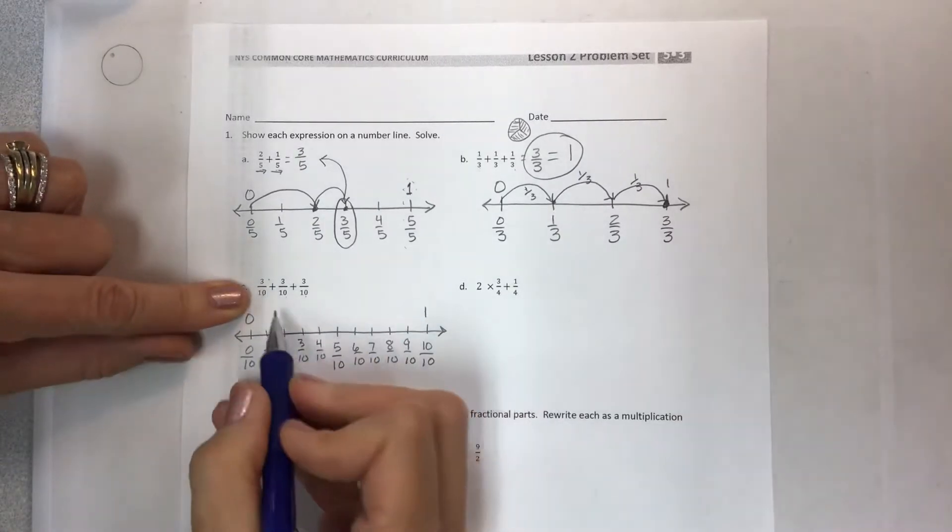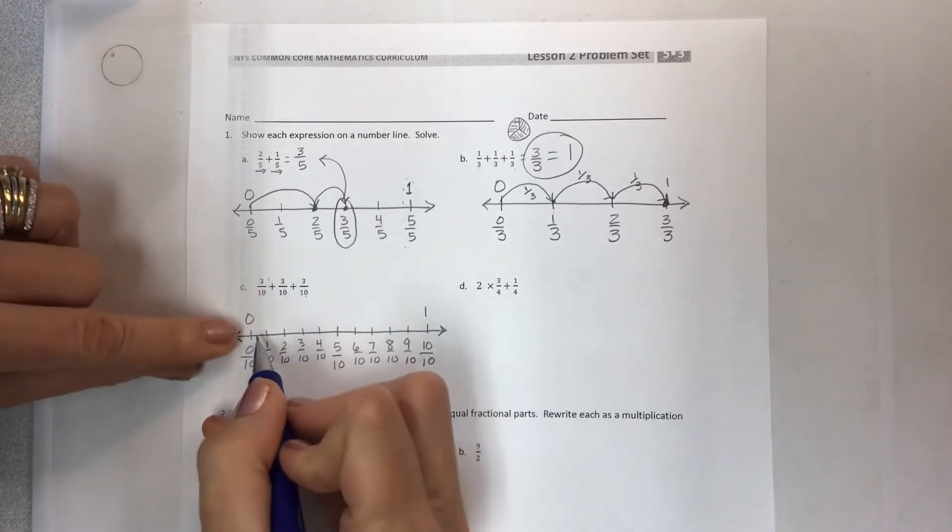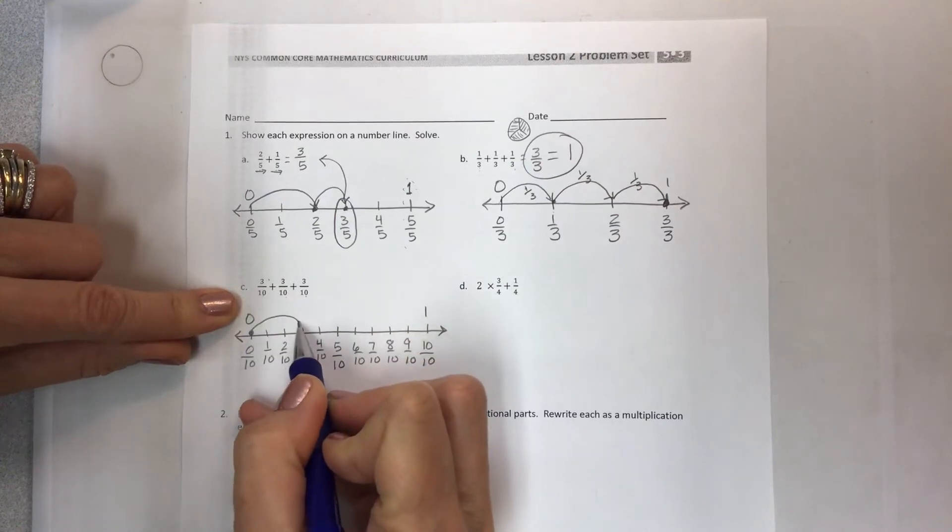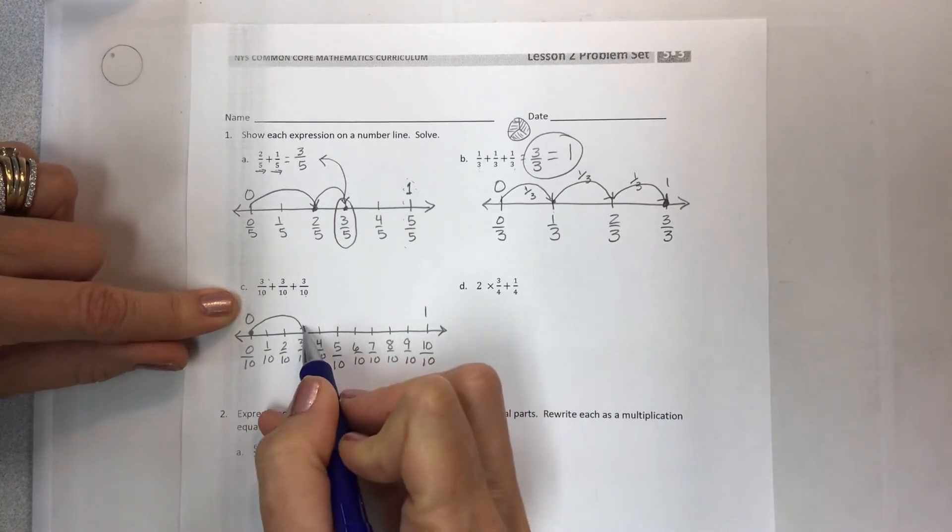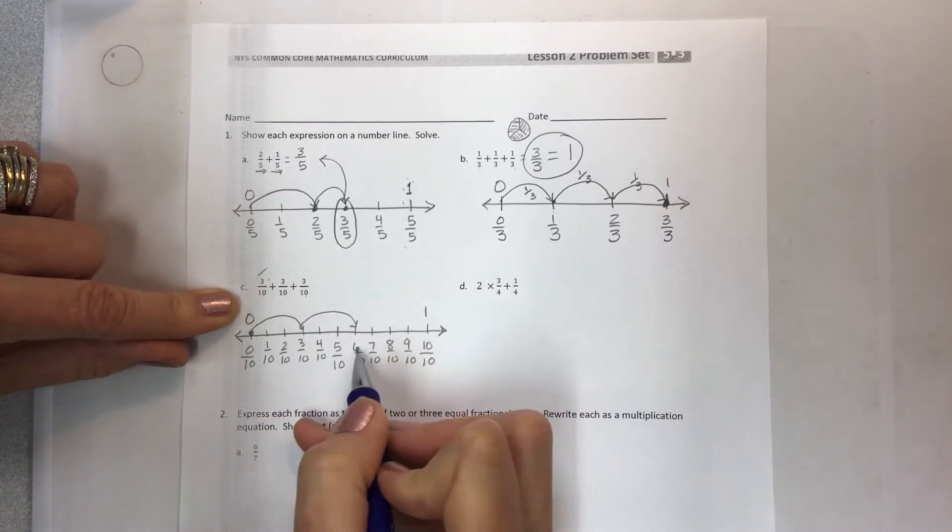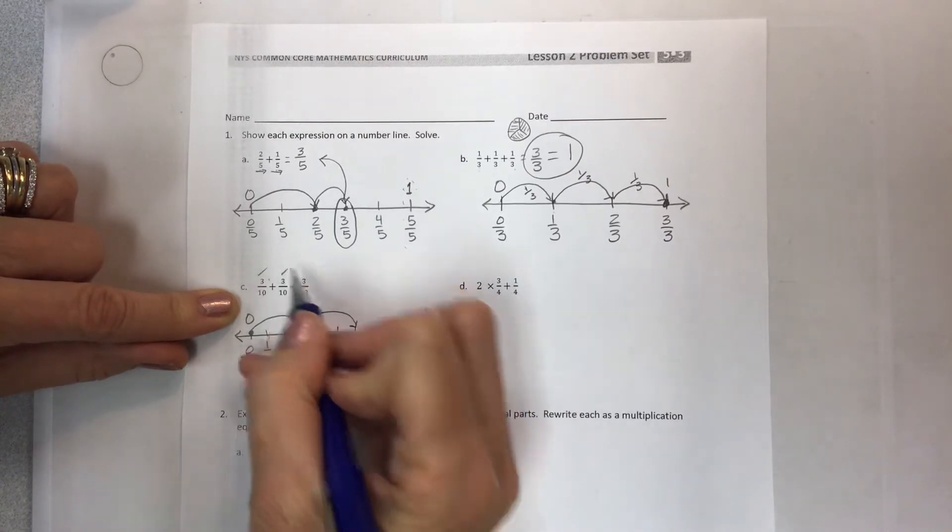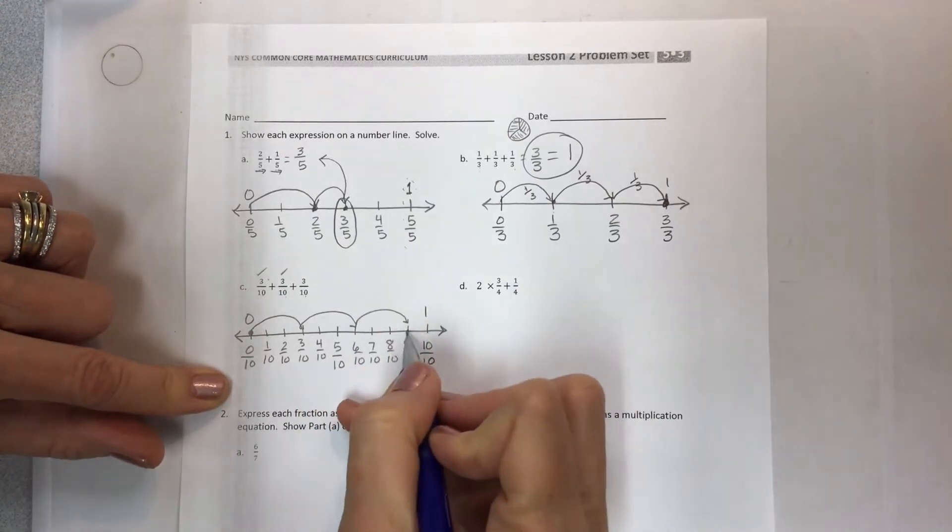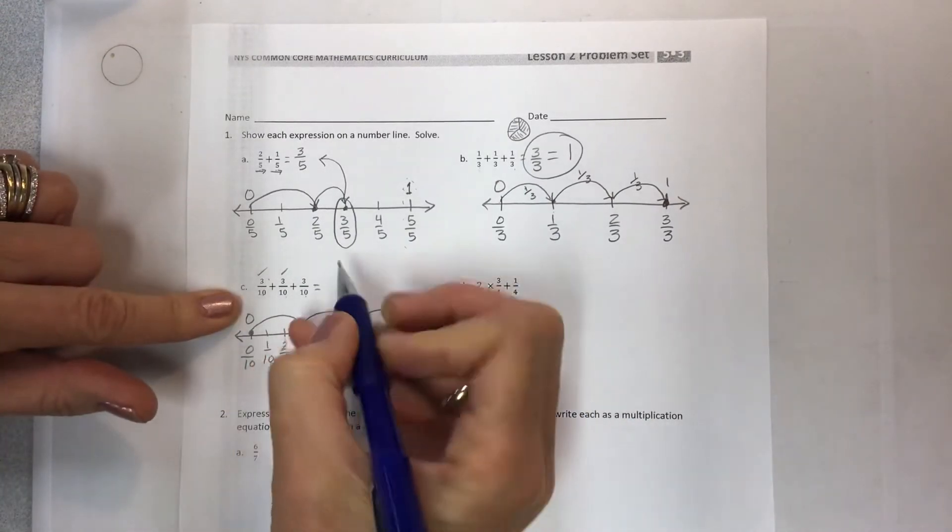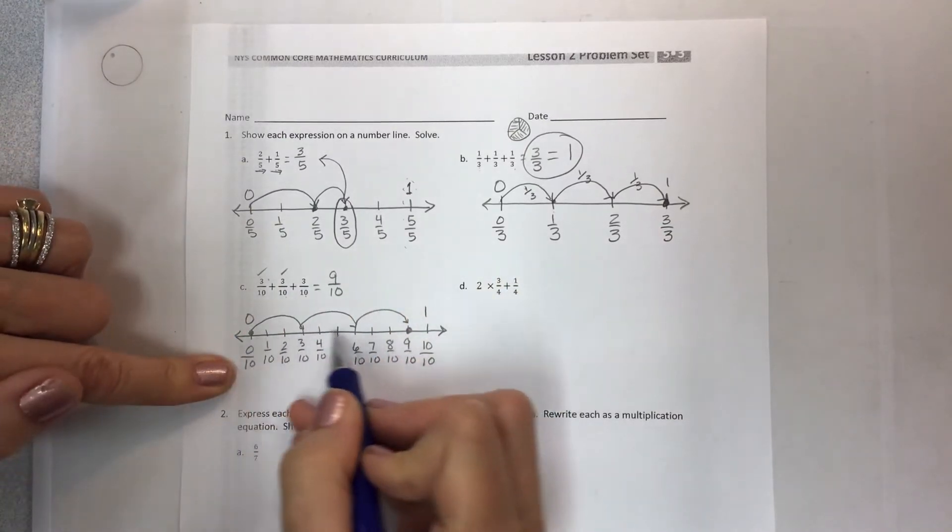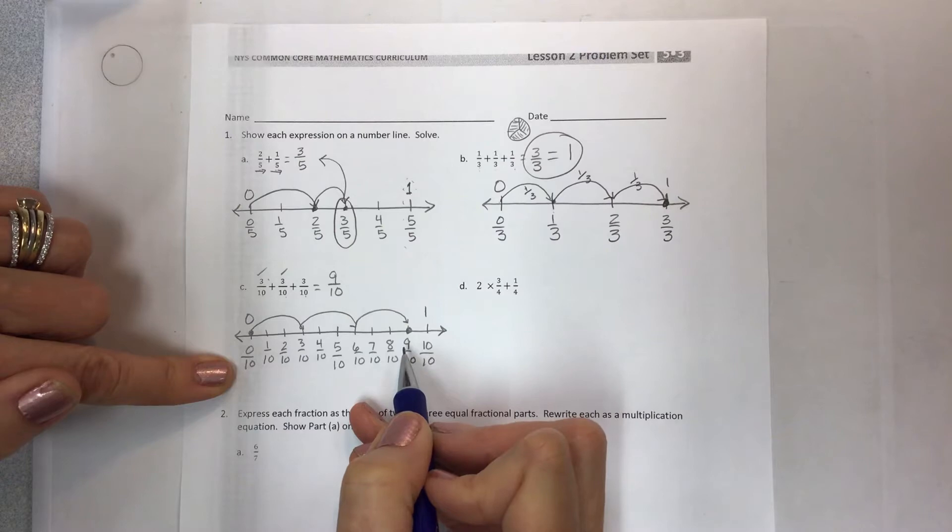Now, what do I do? I'm going to take each one as one hop. So I'll start at zero and go one, two, three. Then I'm going to have another one. So I'm going to check that one off. One, two, three. And I should be at six. Then I'm going to go one, two, three. And you knew in the beginning that this would be nine tenths. That's not the challenge. The challenge is showing it on a number line.